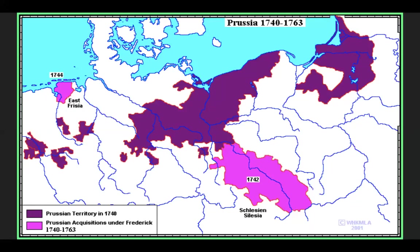This map shows Prussia in 1740, and the highlighted areas in light pink show what they would go on to acquire.